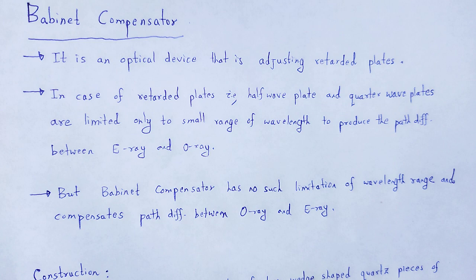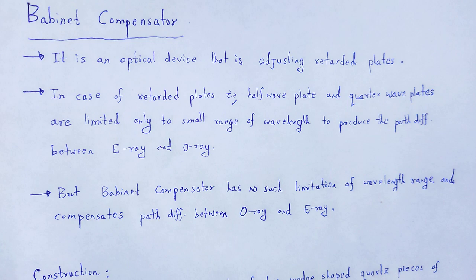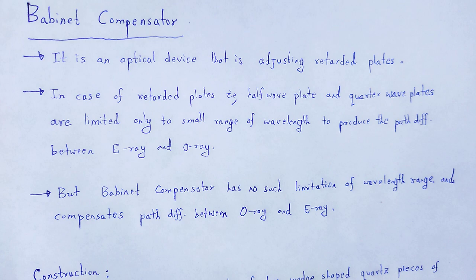The drawback is that if the thickness of the retarder plates is fixed and does not vary, then for a particular wavelength we get that particular path difference between E ray and O ray. But for a variable thickness, or we can say for a long range of wavelengths, we cannot achieve a particular path difference between these two rays. That is why, to overcome such difficulties, we introduce another optical instrument known as the Babinet compensator.